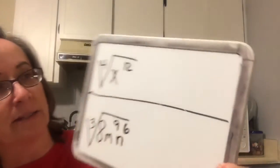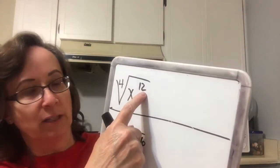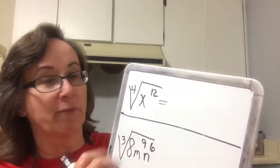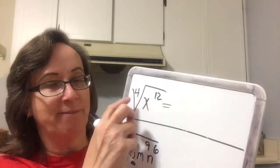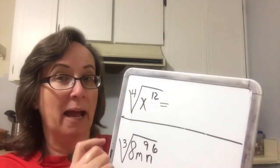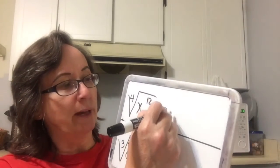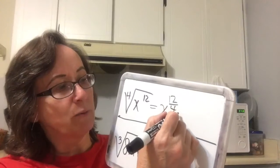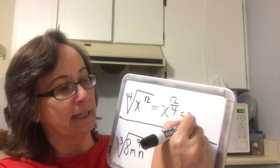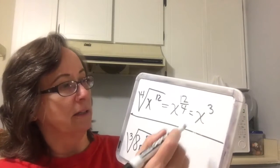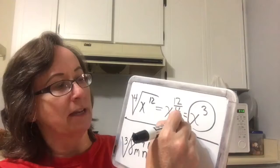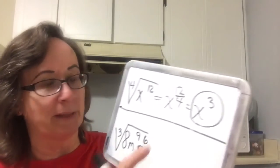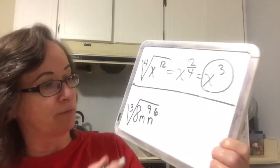These aren't so bad. We have a fourth root and a 12th power, and we're going to remember our rule for higher powers — when we have a factor in our index and our power that are the same, we're going to write that as x to the 12 over 4 as a rational exponent. The 12 over 4 cancels and gives us x cubed. As a radical, it would be out of the radical entirely. There's nothing left because the root has disappeared.